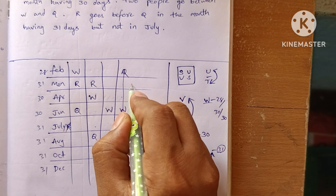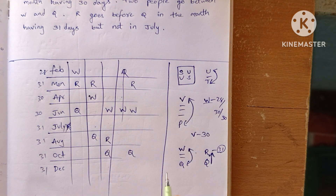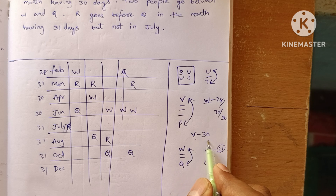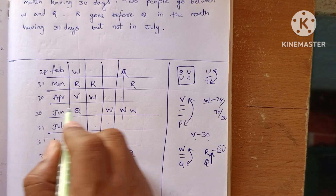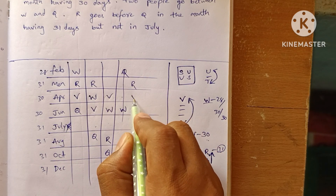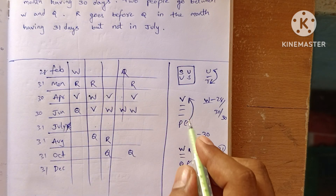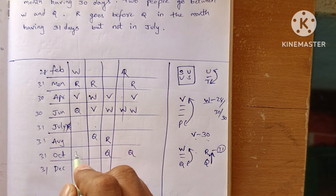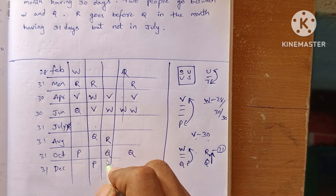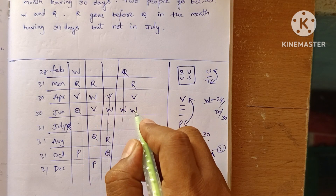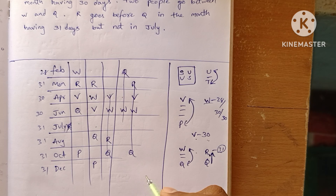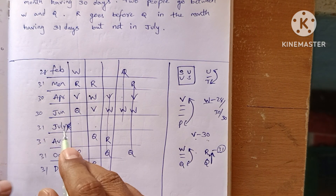V goes in a month with 30 days, so the remaining 30-day months narrow V's position. Checking the clue of three people between V and P, we test each possibility. Some arrangements give no valid position for P, so those cases are eliminated as false.